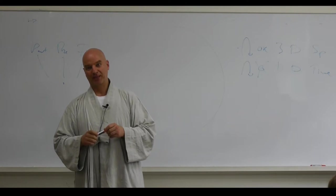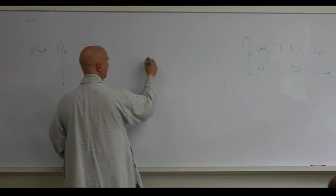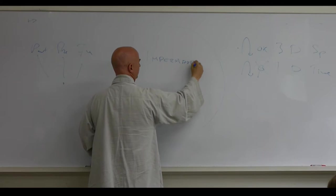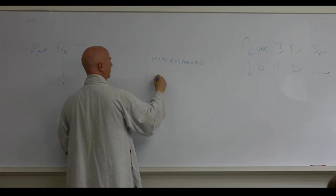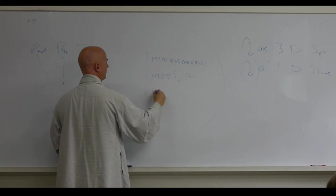And now we talk about imperfection. The third mark of our existence. So the first is impermanence. Interdependence. Then interdependence. Then interdependence. And then imperfection.